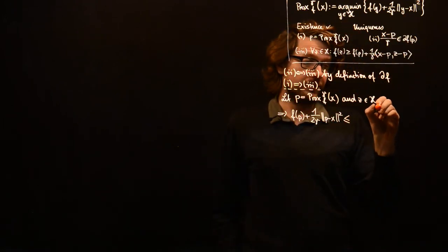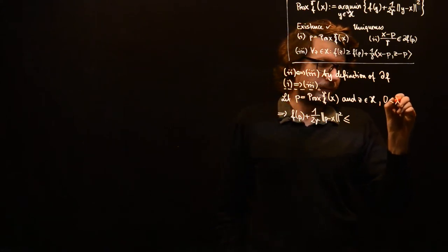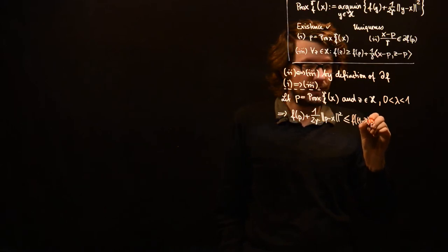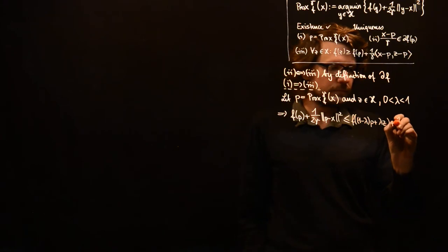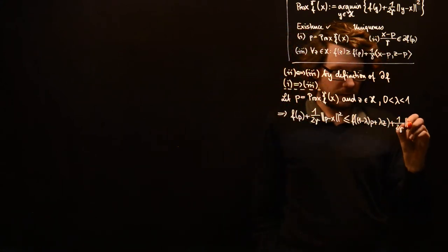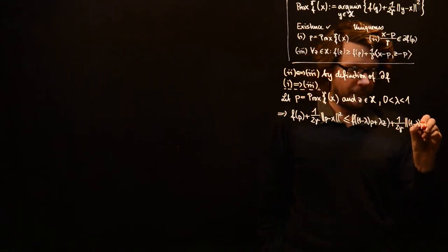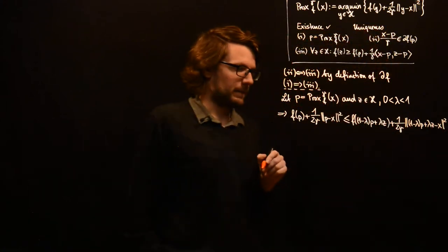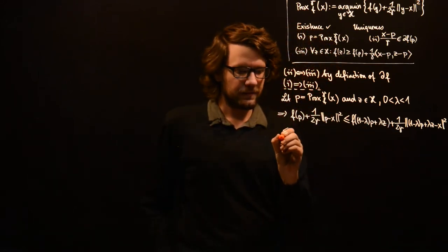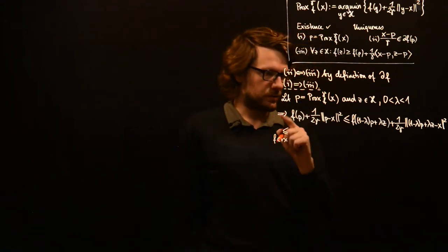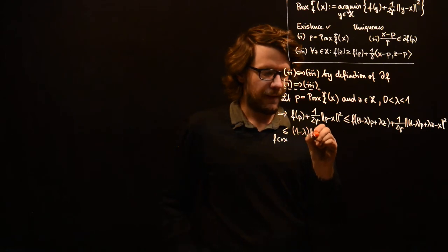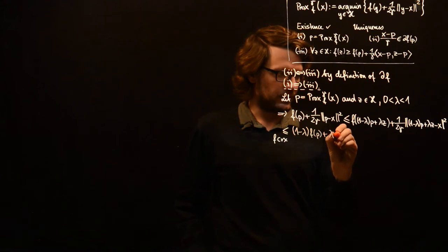In particular, if we choose lambda between 0 and 1, we know that if we plug in f of 1 minus lambda times p plus lambda times z, we get a larger or equal value. Now we can use the convexity of f to obtain that this expression is less or equal than 1 minus lambda times f of p plus lambda times f of z.